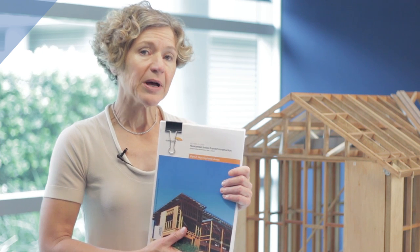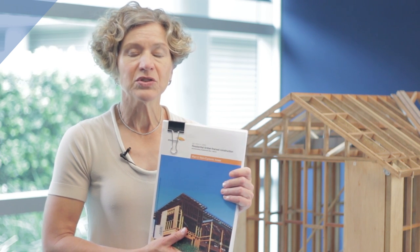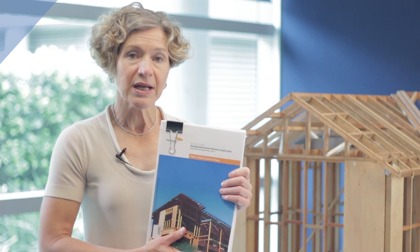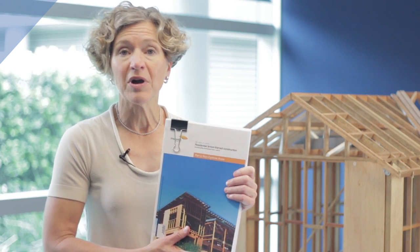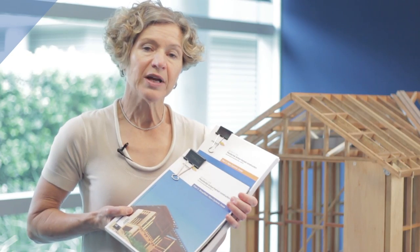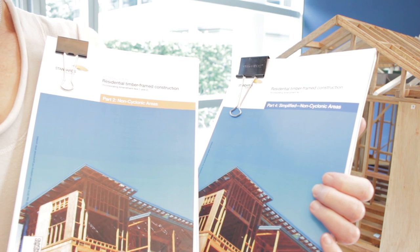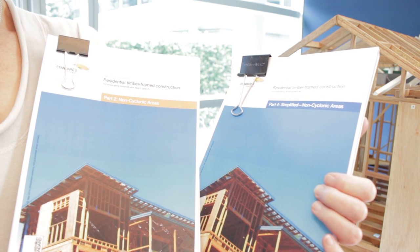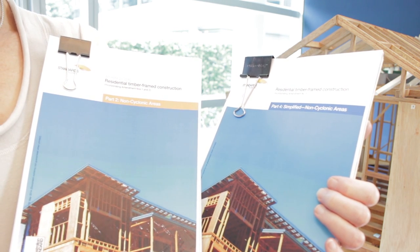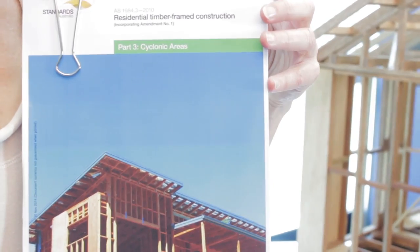The first part deals with how the values used in the span tables and the other parts have been derived. Parts 2 and 4 of AS 1684 deal with non-cyclonic loads, with Part 4 being a simplified version. Part 3 of this Australian standard deals with the design of timber framing in cyclonic areas.